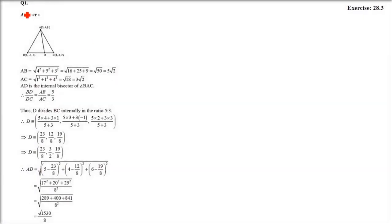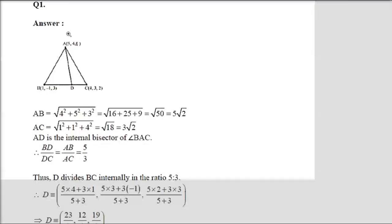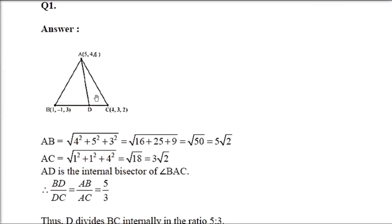The first question is: the vertices of the triangle are A, B, C. Three points are given. The internal bisector of angle A meets BC at D. Find the coordinates of D and the length AD. Let me explain the question first. This is a triangle and three vertices are given.